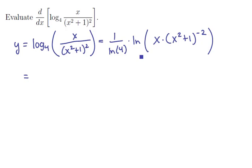Now remember we've got a logarithm here which means we can use the rules of logs to break it up. So there's a 1 over ln of 4 in the front. Now we're going to break this up as ln of x plus ln of the quantity x squared plus 1 to the minus 2 using the first rule of logarithms.